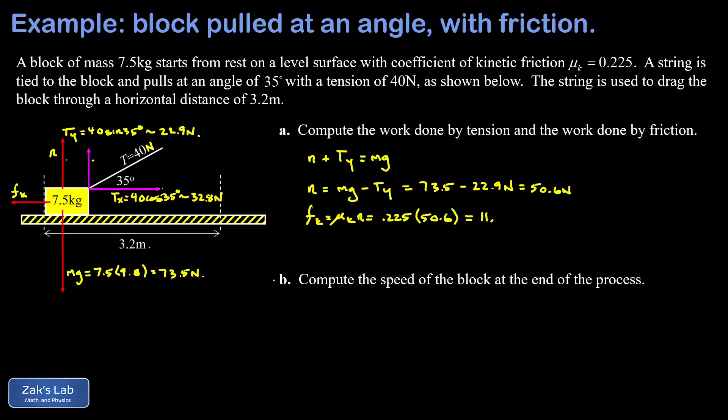We're finally ready to compute the work done by each of the requested forces. The work done by the tension - that's the parallel component of the force, Tx, 32.8 Newtons. So the work done by the tension: 32.8 Newtons parallel component of the force multiplying the displacement, and this parallel component is in the exact same direction as the displacement, so it's just a simple multiplication.